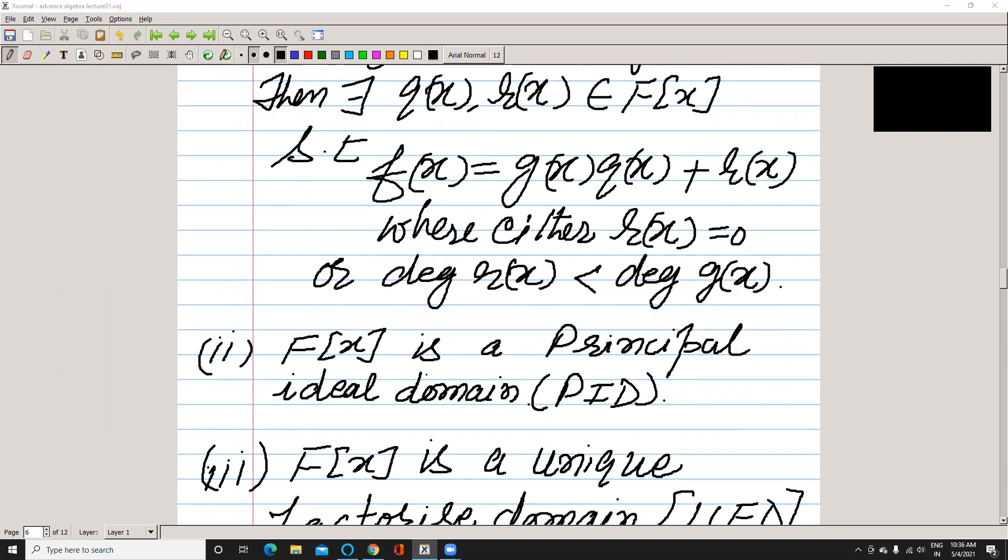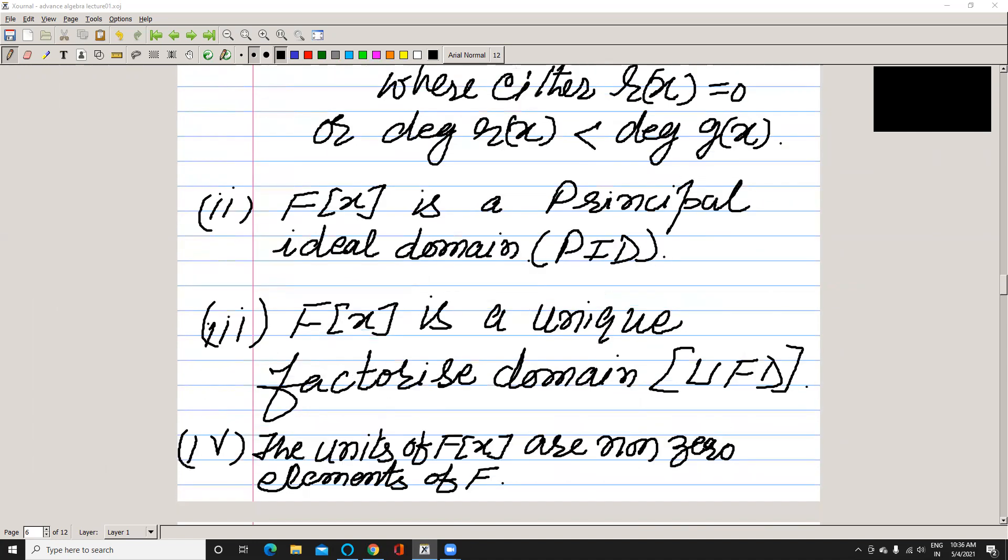The second property is that F[x] is a principal ideal domain. I assume you already know what a principal ideal domain is from your classes. The third property is F[x] is a unique factorization domain, that is UFD. This is also known to you, I assume.